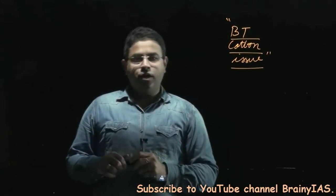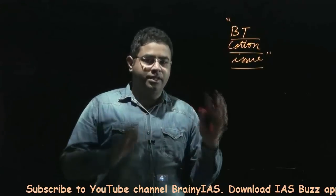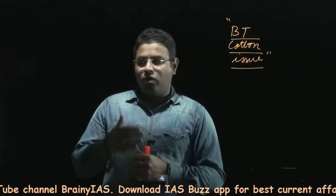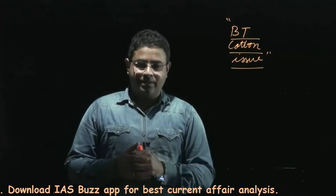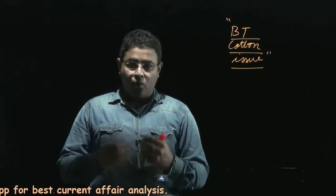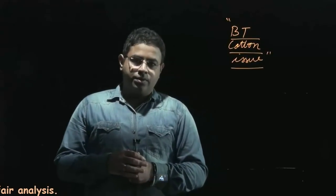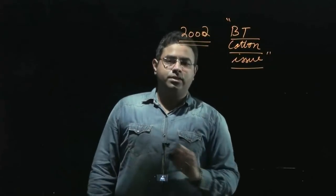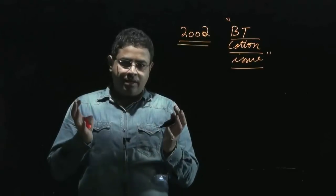The yield of cotton depends upon how many insects have infested a particular crop and how many weeds have infested it. If we want higher yield from cotton, we need to protect the cotton from insects and weeds. Because India is a tropical country, it is prone to a lot of insects and weed development. So BT cotton was introduced in India in the year 2002, and it gave a big push to cotton crop yields.